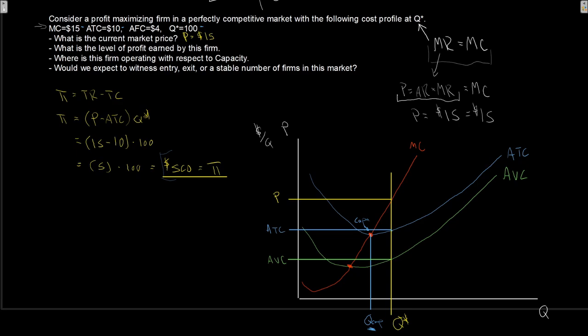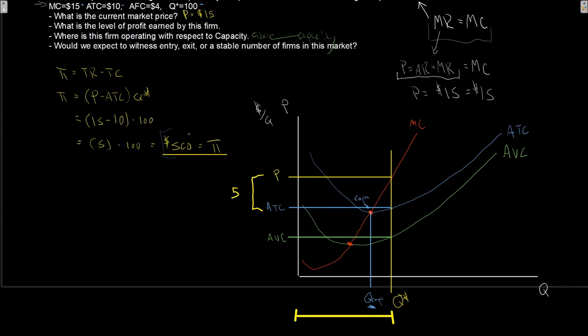Paring down. Average total cost. Average variable cost. Where am I then with respect to capacity? Well, Q star is above capacity. I'm producing more stuff here than I would be at capacity. So I am operating above capacity.